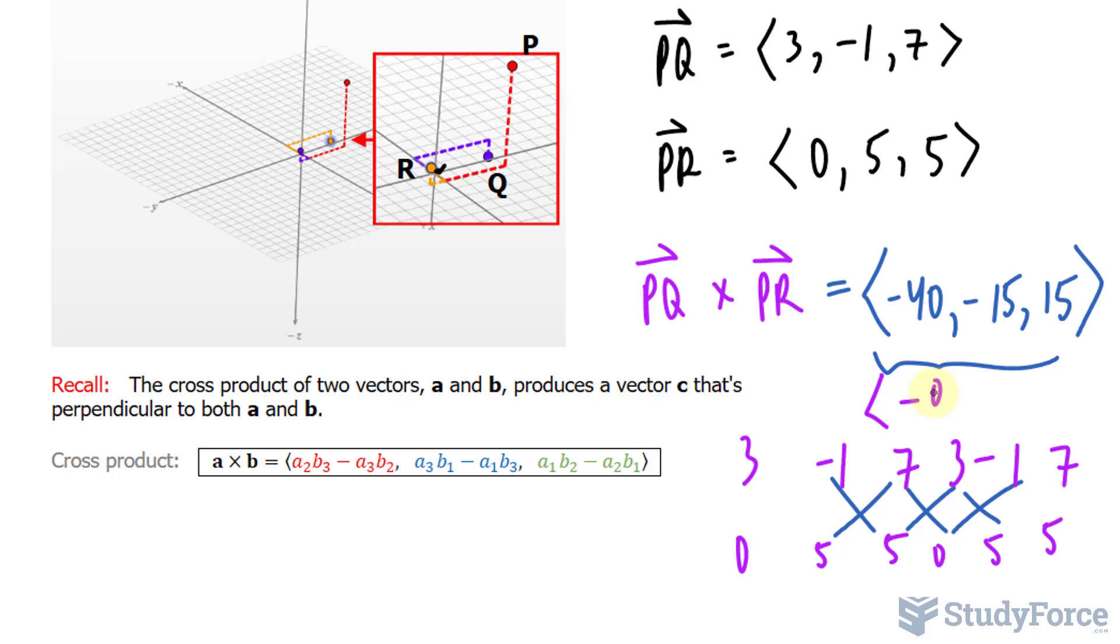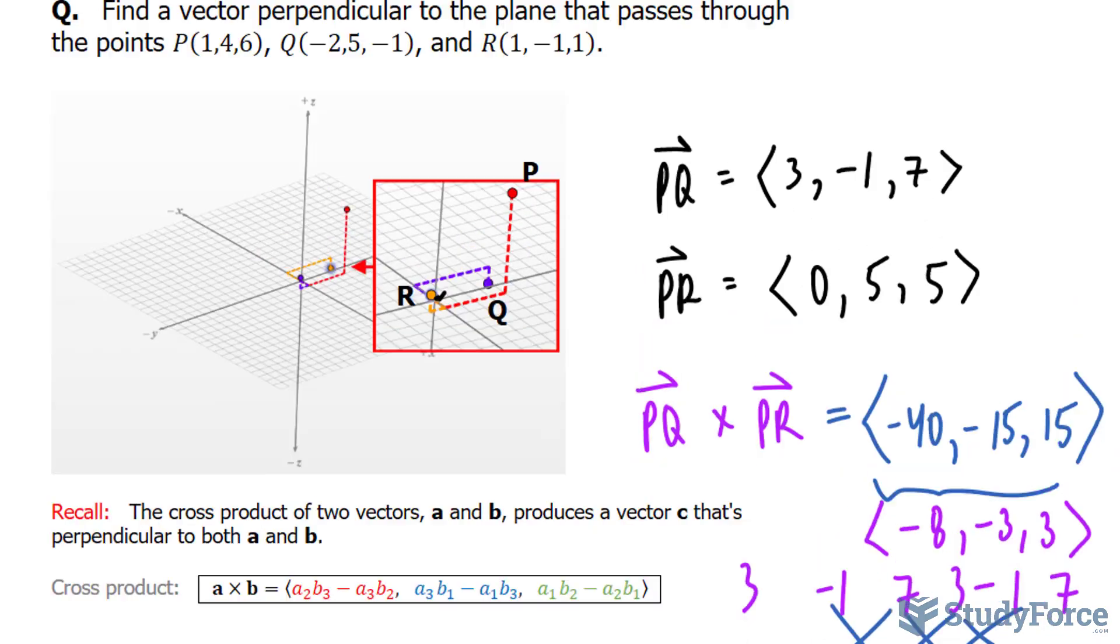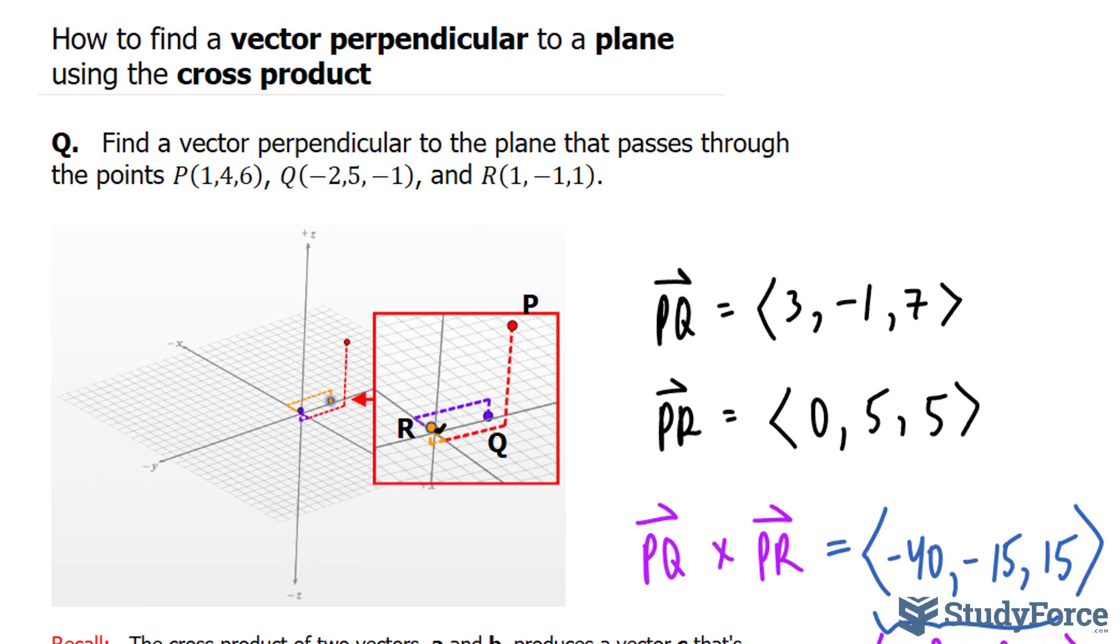So we can write this as negative 8, negative 3, and positive 3. That vector, as well, is perpendicular to this plane. And there you have it. That is how to find a vector perpendicular to a plane using the cross product.